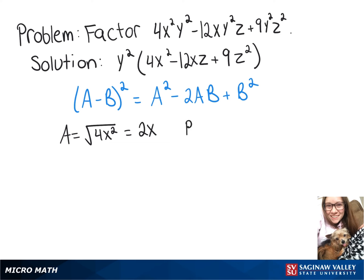Our b term would be the square root of the last term, so the square root of 9z squared, and that gives us 3z.